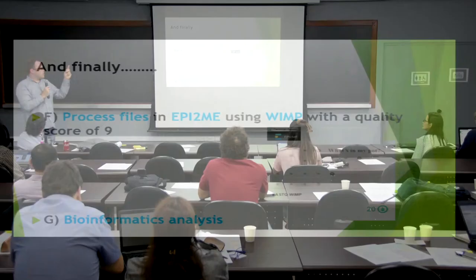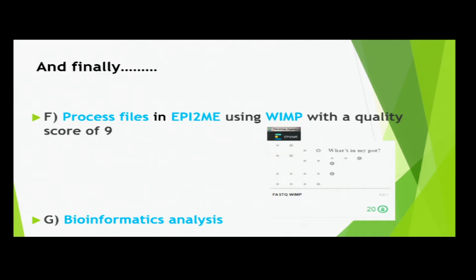Finally, the software: Oxford Nanopore's EPI2ME. What's on the plot is what you use for shotgun sequencing. There are different quality scores available - from talking to Oxford Nanopore and collaborators, we're going to use a quality score of 9 to improve accuracy. You also need bioinformatics analysis to discriminate between more than 10 samples, and we have collaborators for that.